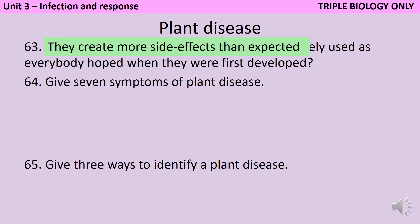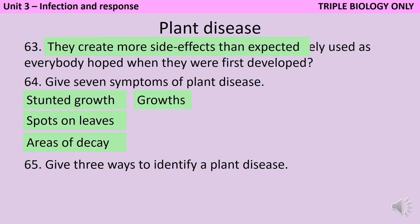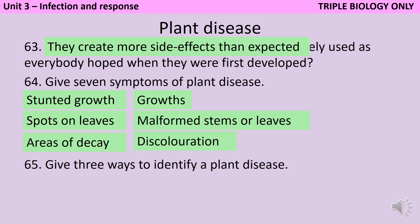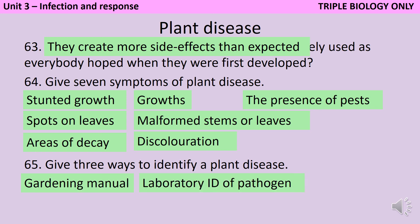Symptoms of plant disease include stunted growth, spots on leaves, areas of decay, growths or tumours, malformed stems or leaves, discolouration like the purple and black spots in rose black spot or the yellow chlorosis seen in tobacco mosaic virus, and also the presence of pests like aphids. You can identify a plant disease using a gardening manual, laboratory identification of the pathogen, or using monoclonal antibody testing kits rather like the lateral flow assay we just looked at.